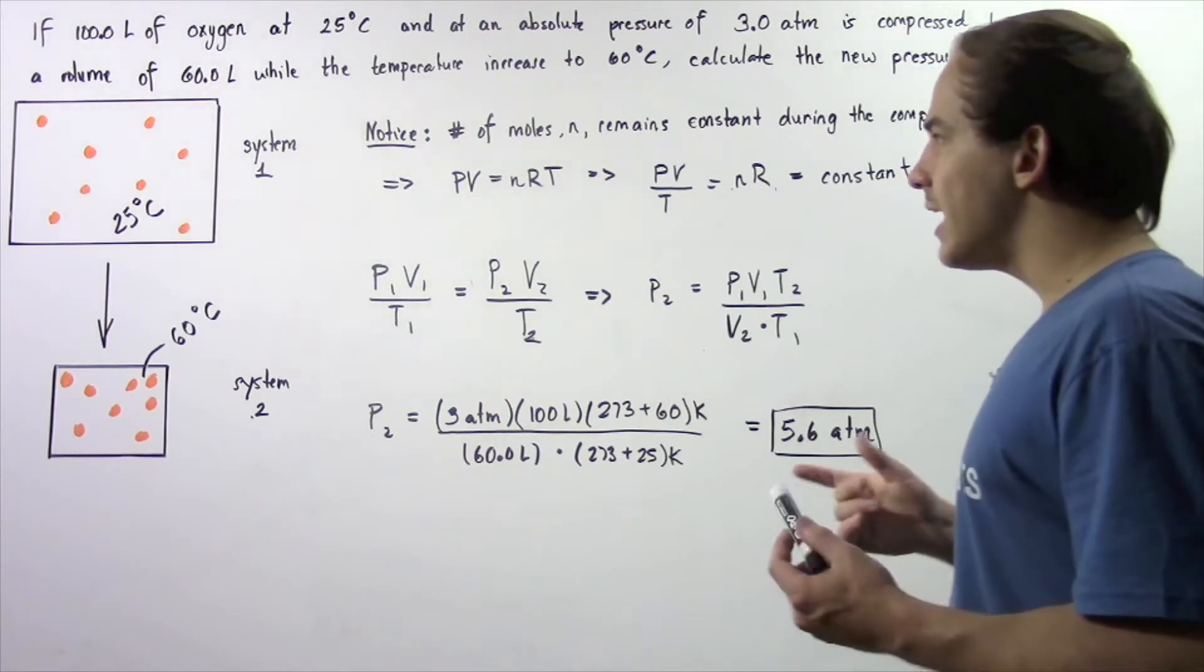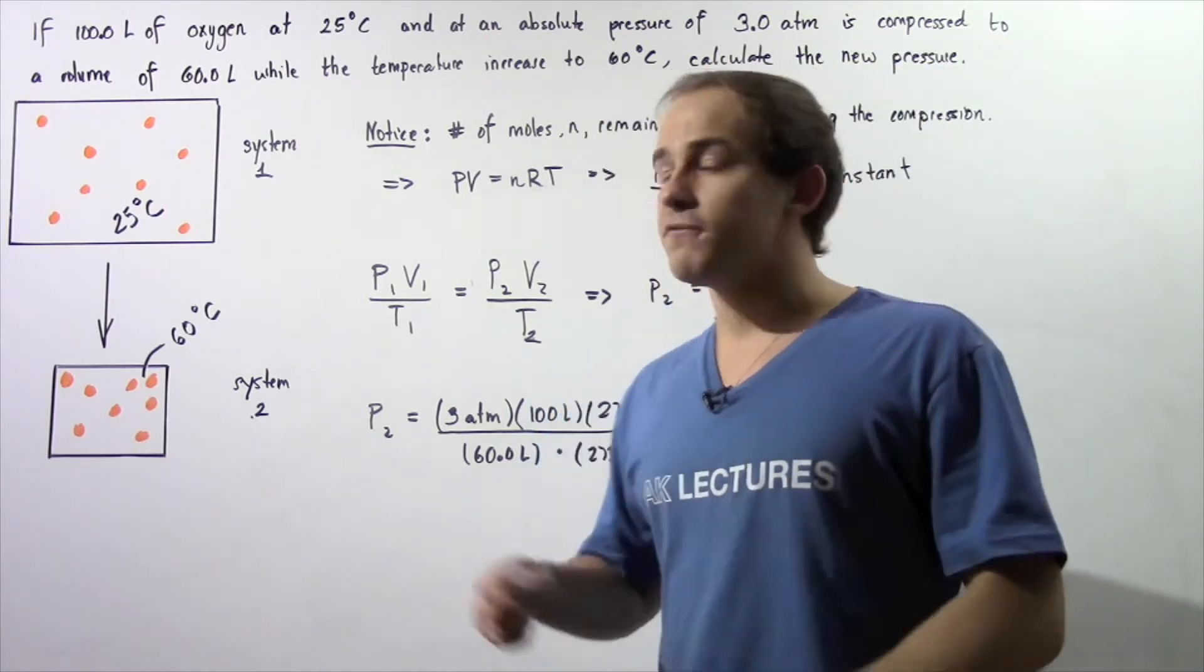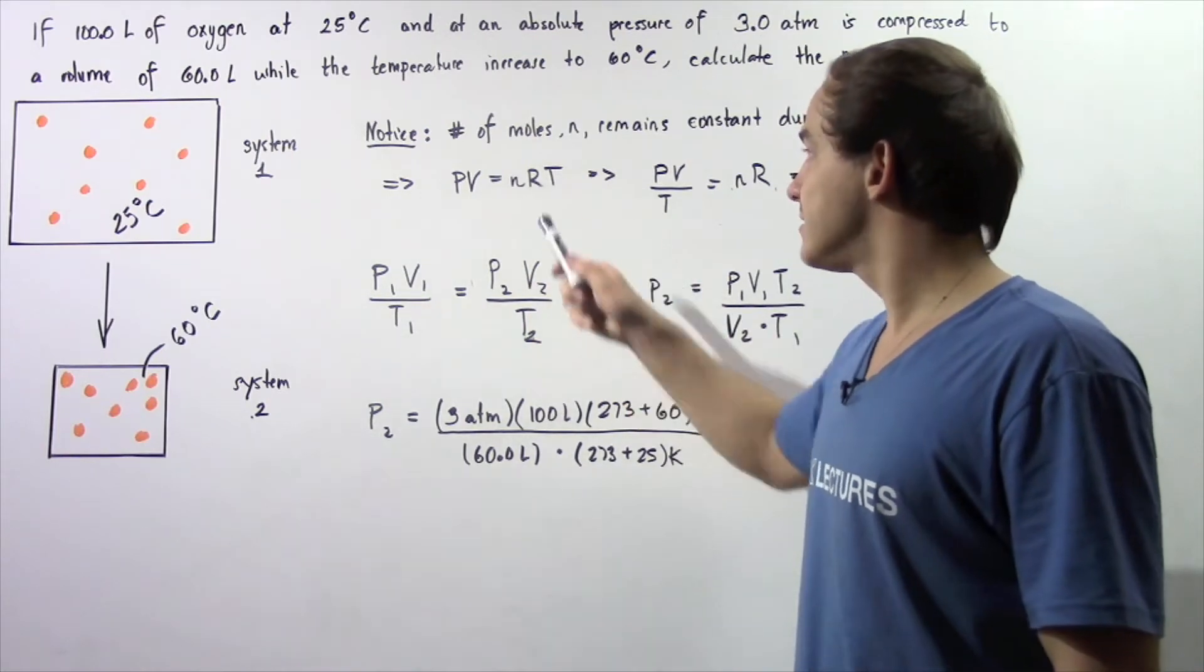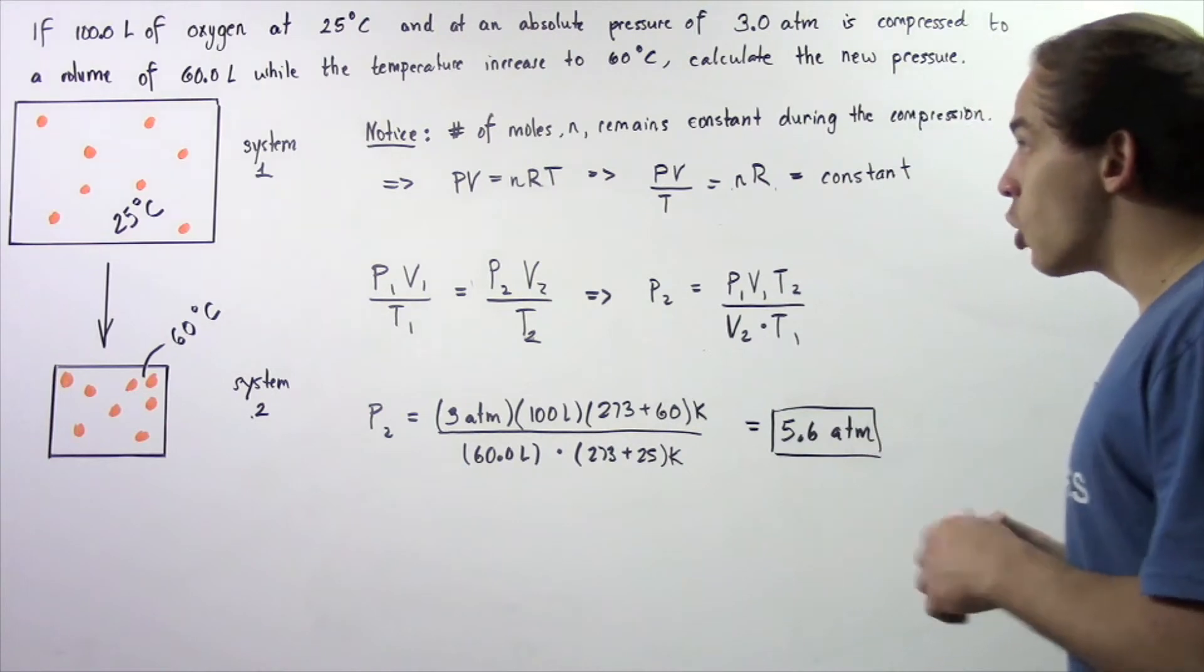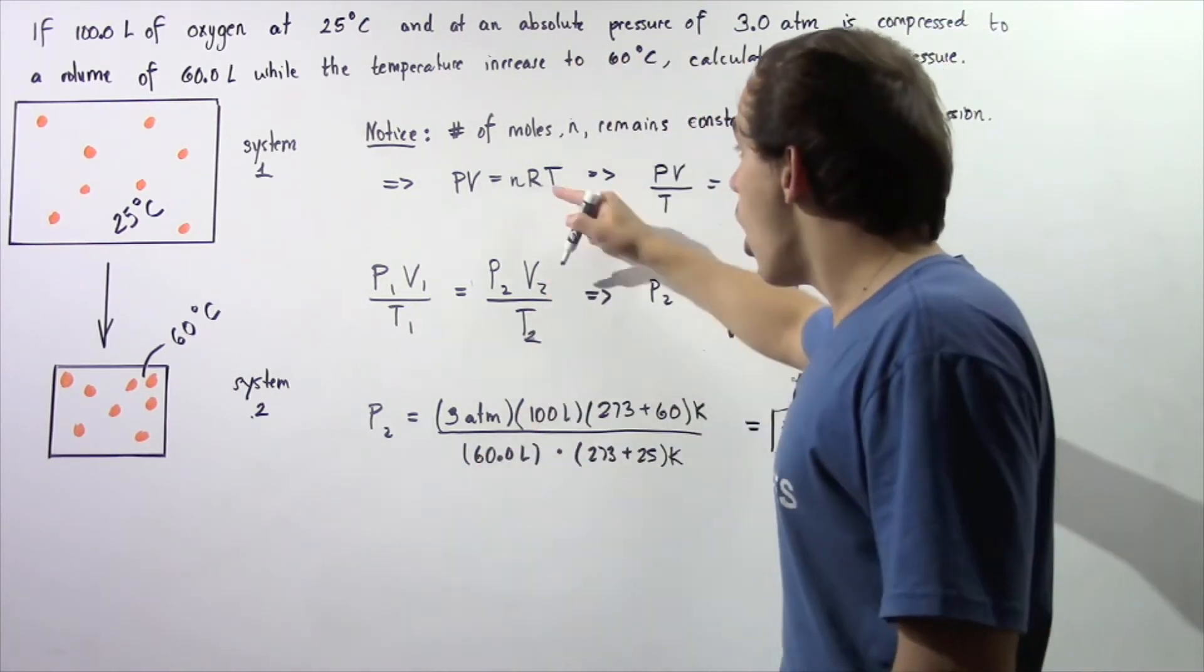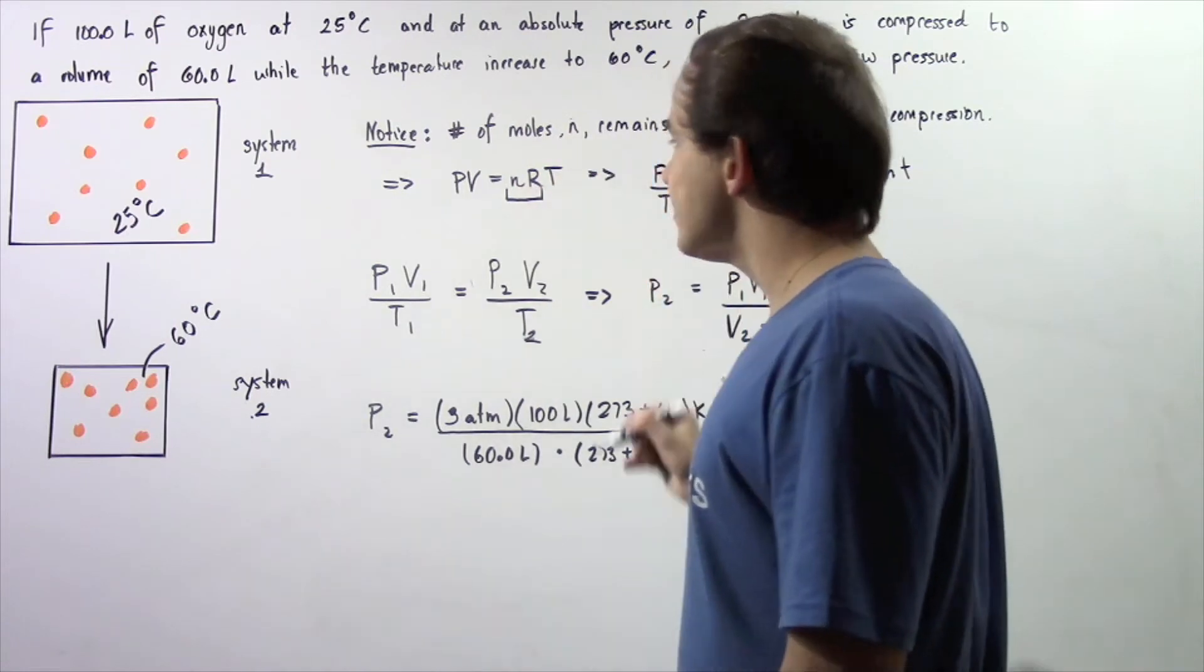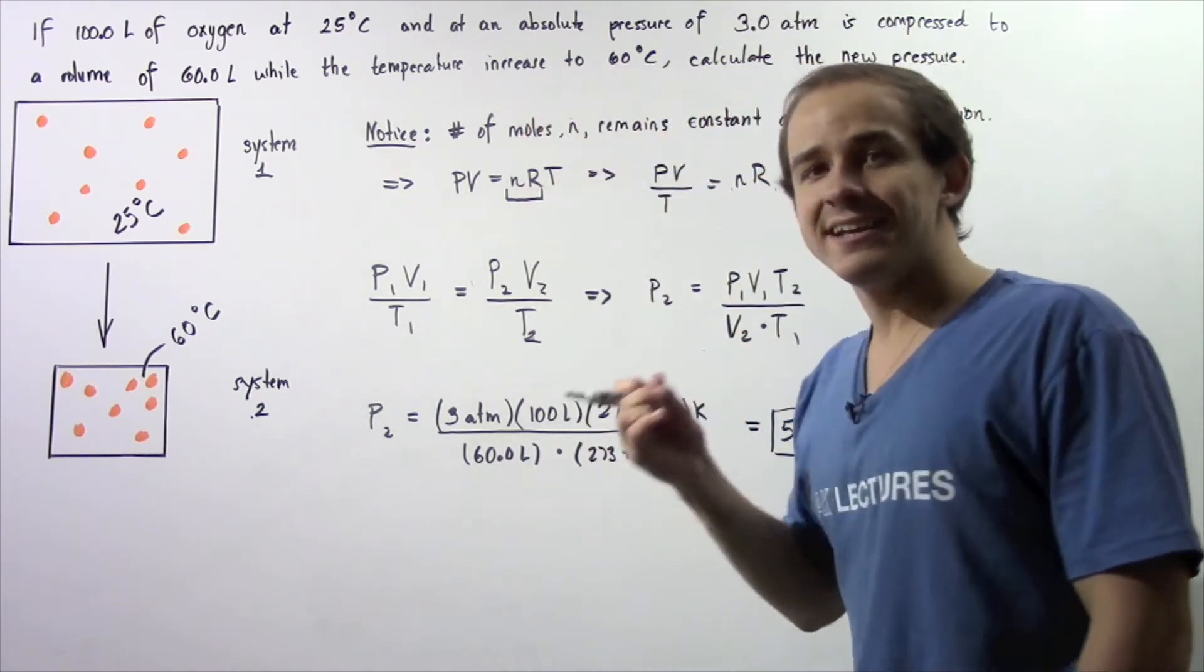So let's actually apply our ideal gas law which states that the product of the pressure and the volume is equal to the product of the number of moles, our gas constant, and the temperature given in Kelvin. So notice that we just said N remains constant and R the gas constant is also a constant. So the product of N and R is also a constant.